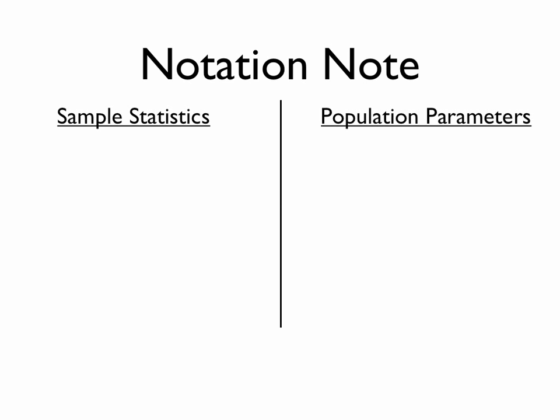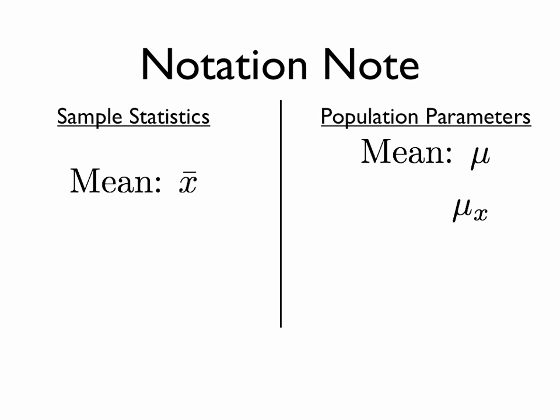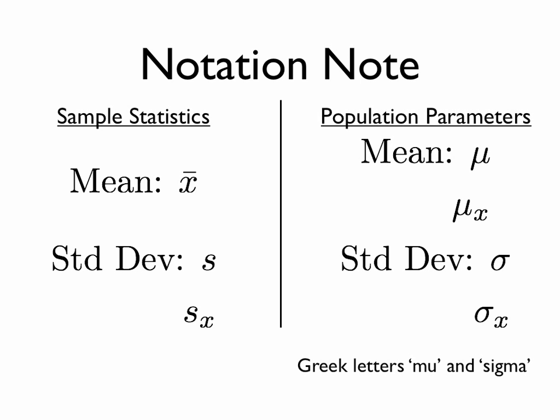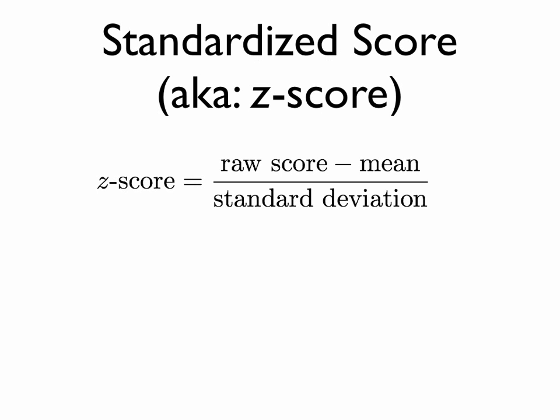A notation piece: when dealing with sample statistics, the mean is denoted as x-bar — x with a horizontal line over top. When dealing with population parameters, the truth about the entire population, we use Greek letters: mu, or mu of x. For standard deviation, in a sample we use s, or s of x; the population parameter version is the Greek letter sigma, or sigma of x. So, to make this a more compact calculation, the z-score is calculated as x minus mu over sigma — that is, the original score minus the mean, divided by the standard deviation.